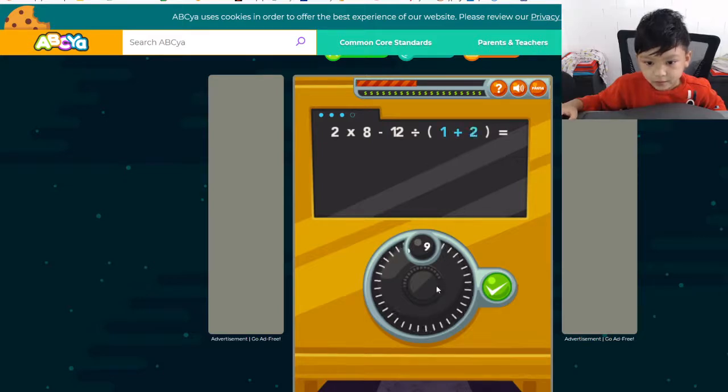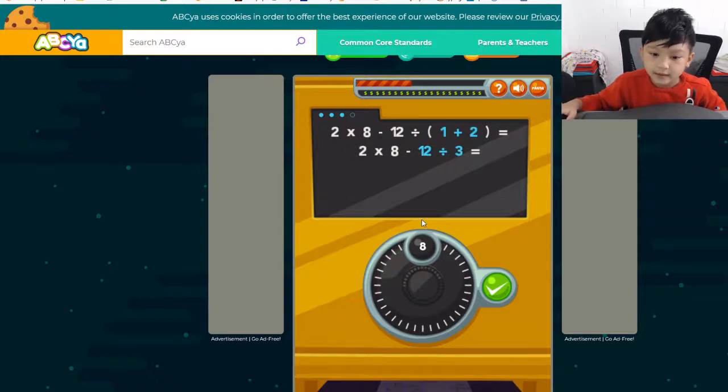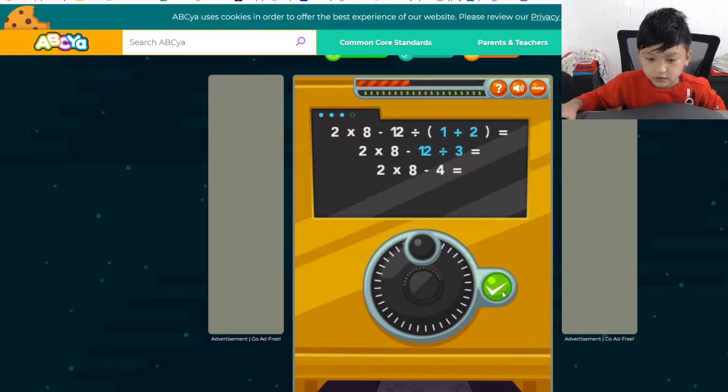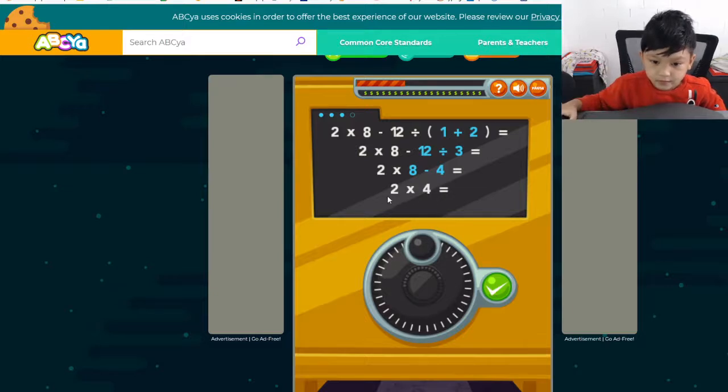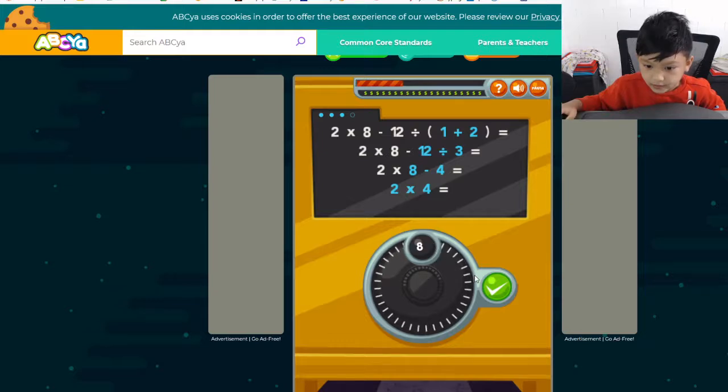One plus two. Two. Right? So, plus twelve divided by three. Four times three equals twelve. So, the answer here is four. And eight minus four. Eight minus four equals four.